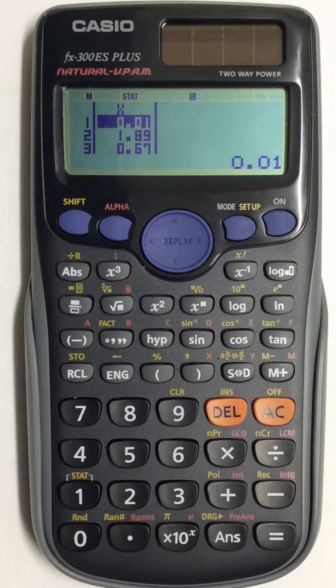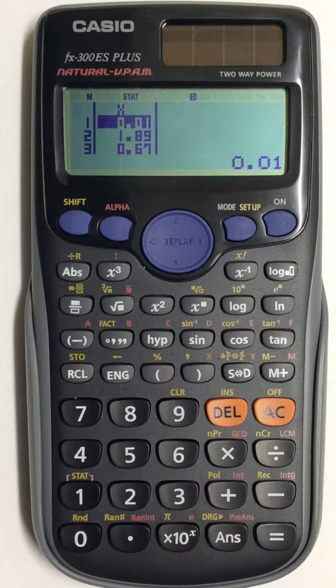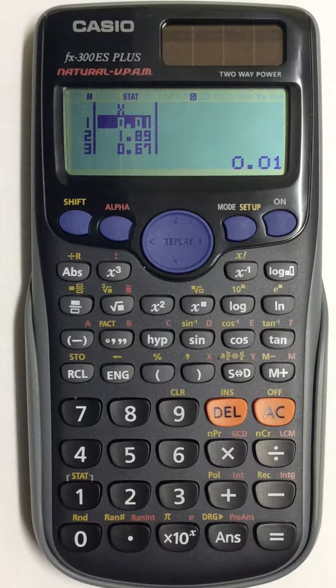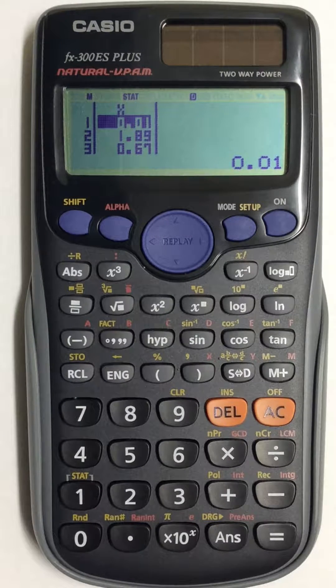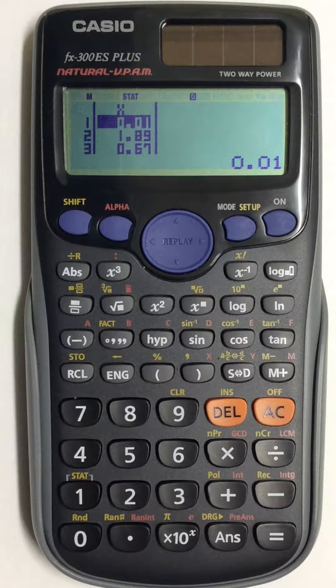In this video, I will show you how to find the values for the five-number summary to construct your box plot in the Casio 300ES Plus Scientific Calculator.